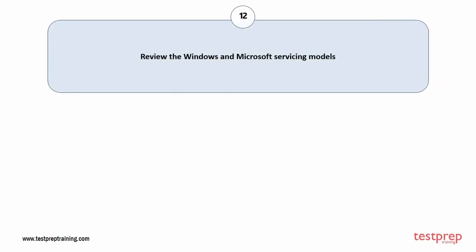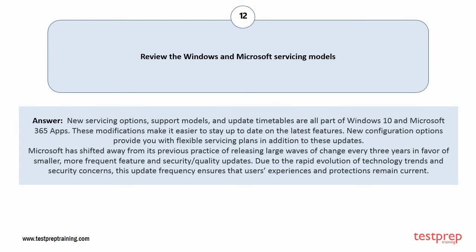Question number 12: Review the Windows and Microsoft servicing models. New servicing options, support models, and update timetables are all part of Windows 10 and Microsoft 365 apps. These modifications make it easier to stay up to date on the latest features. New configuration options provide you with flexible servicing plans in addition to these updates. Microsoft has shifted away from its previous practice of releasing large waves of change every three years in favor of smaller, more frequent feature and security or quality updates. Due to the rapid evolution of technology trends and security concerns, this update frequency ensures that users' experiences and protections remain current.